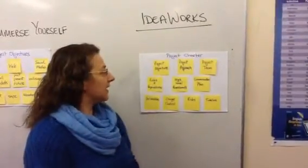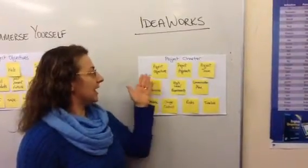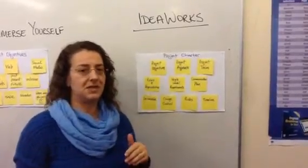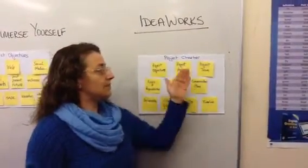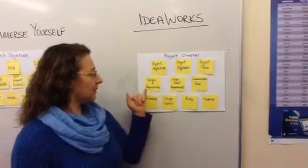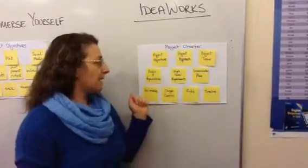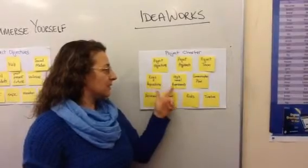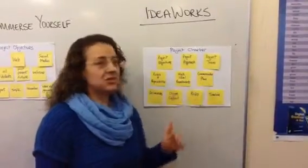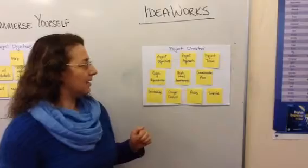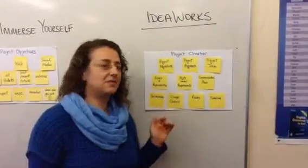Our project charter is made up of these major categories: namely our project objectives, which I will go into the details of very soon, an outline of our project approach, and the project team itself. I will highlight the roles and responsibilities of all the team members, as well as the stakeholders, and then outline high-level requirements for the project. I'll also mention the communication plan, the deliverables, and what is expected at the completion of this project.